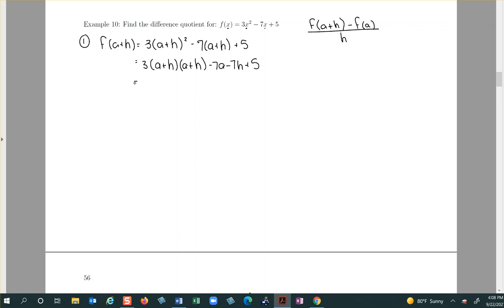However you want to multiply this out, you can distribute the three or you can FOIL the a plus h's and then distribute the three, it doesn't really matter. I'm going to go ahead and distribute the three first, then go ahead and FOIL.